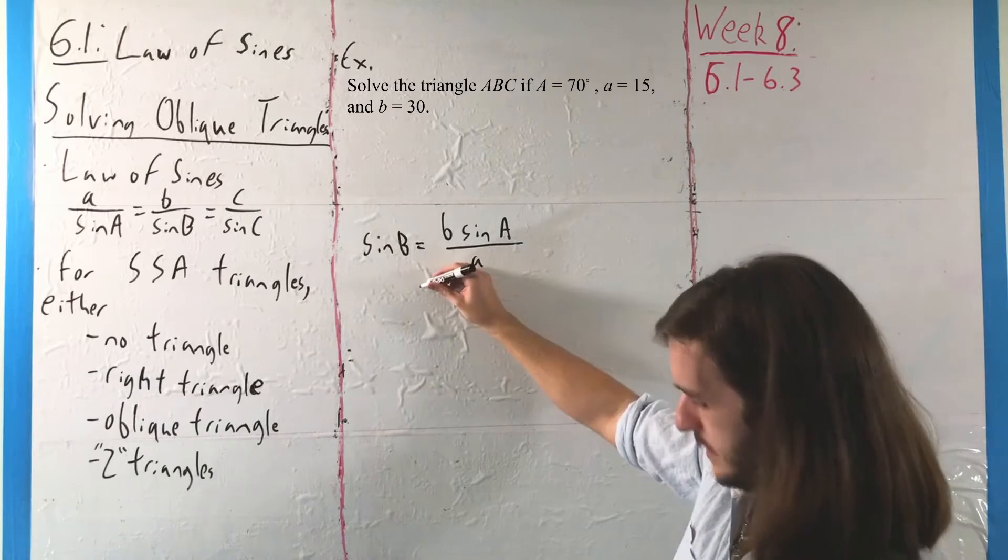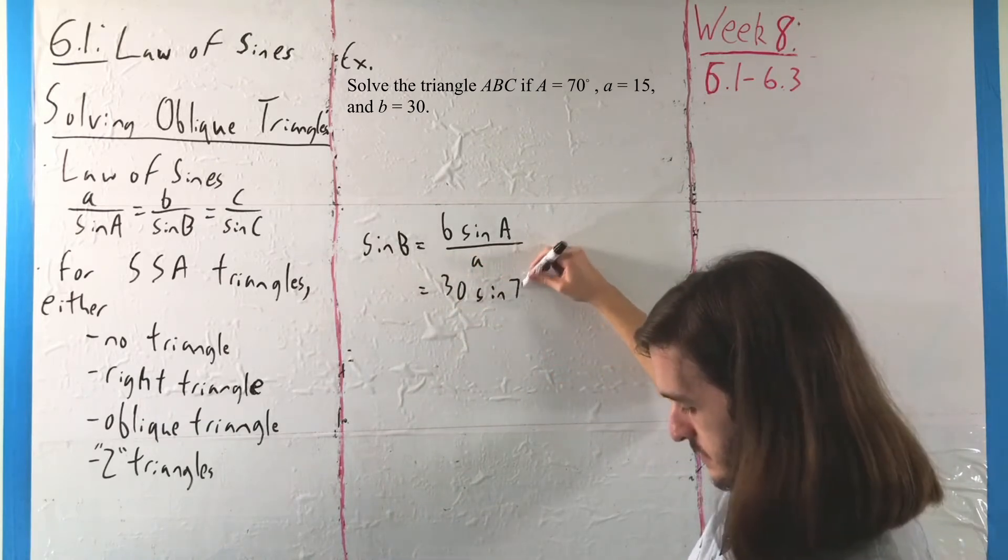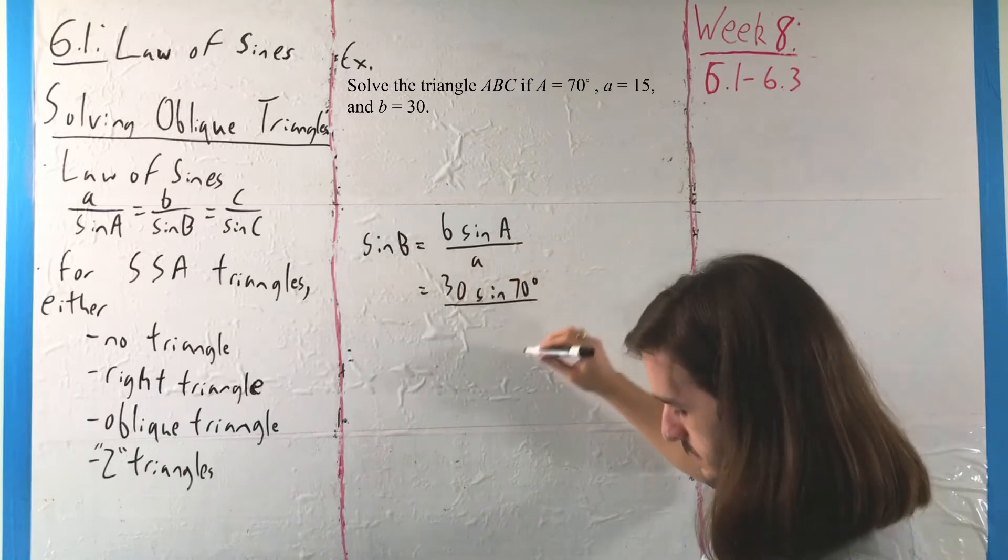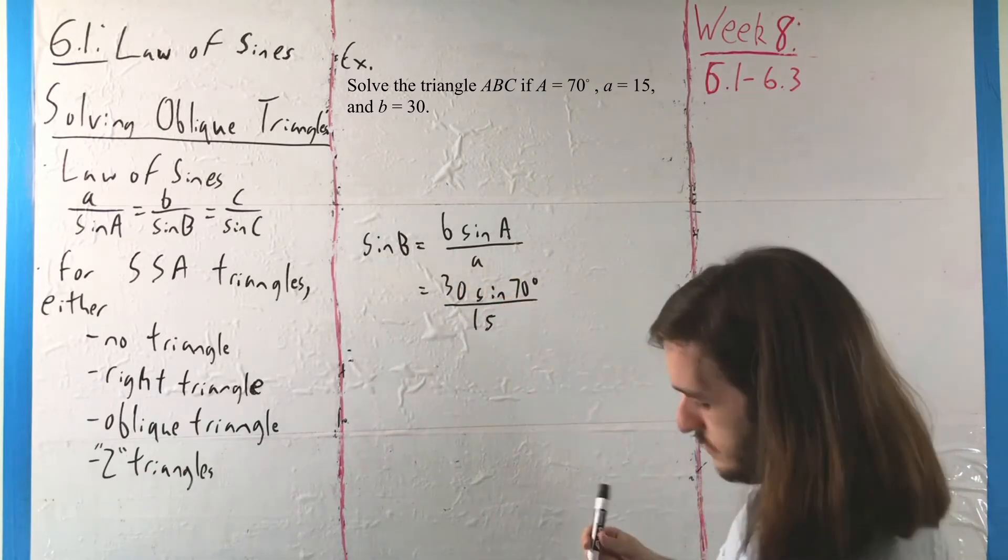In this case, that means we're going to end up with 30 times sine of 70 degrees divided by 15, where this is all unitless measurements other than those degrees there.